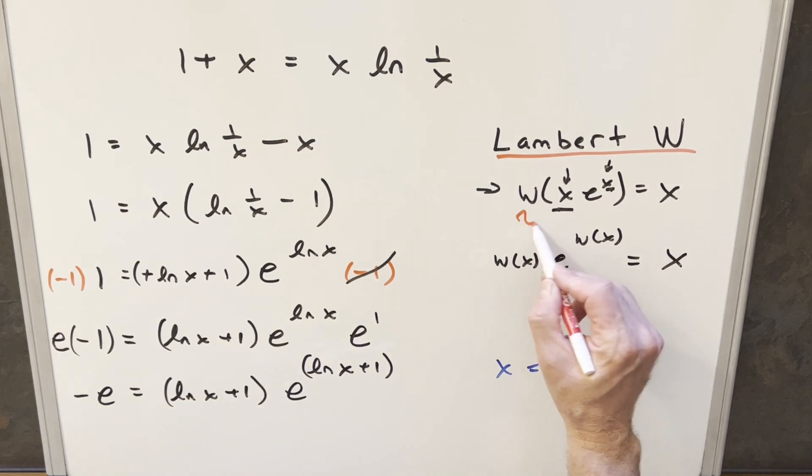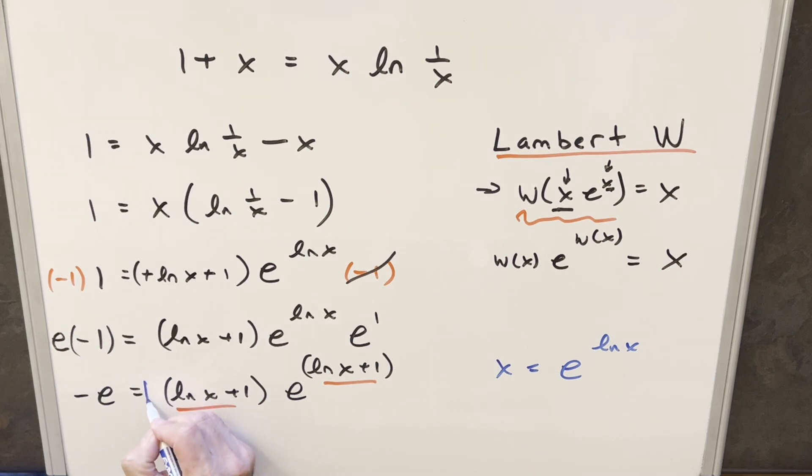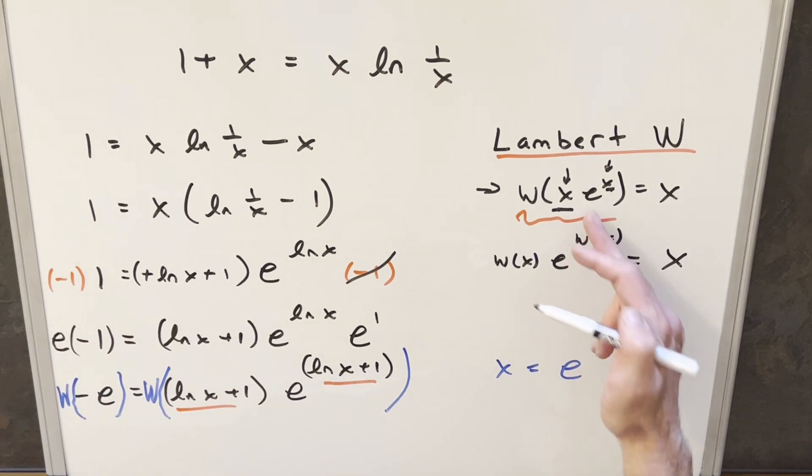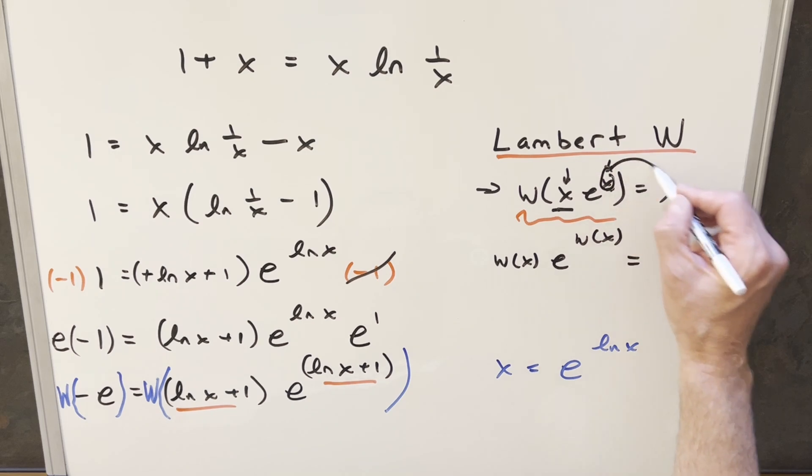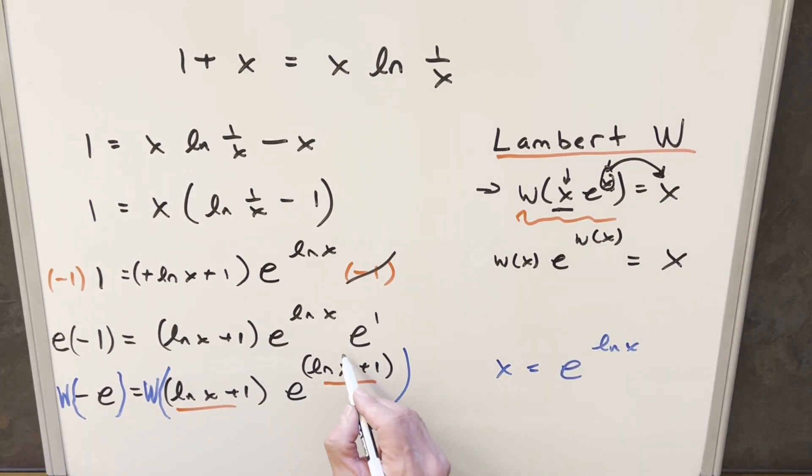But now we're all set up for this formula right here. Now we've got the same coefficient and exponent. What I can do is just take the Lambert W on both sides here. Take Lambert W here. I didn't plan my space very well, but we'll take Lambert W on the left side as well. And then using this formula, when you have it set up, you just take this and that's going to be the solution for this thing. So the right side of our equation is going to be the same thing as natural log x plus 1.